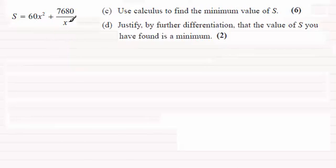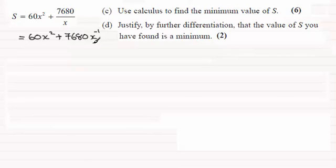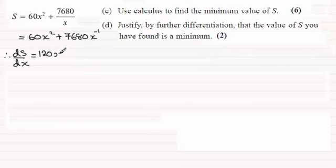In order to get the gradient we need to differentiate this. So let's look at changing this second term on the right hand side — change it to 7680 times x to the power minus 1. Remember x to the minus 1 is 1 over x. So in order to differentiate it now, if we differentiate with respect to x: for the first term we get 2 times 60 which is 120, reduce the power by 1, you've got just x. For the next term, it's going to be minus 7680 times x to the power minus 2 when we reduce the power by 1.